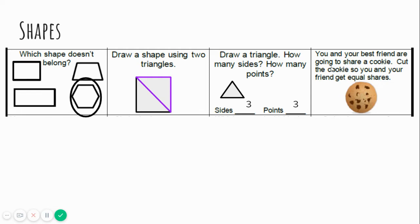You and your best friend are going to share a cookie. Cut the cookie so you and your friend get equal shares. I have to make sure that we both get the same amount. That's what equal means. I'm going to split it straight down the middle and we both get a half. Yummy.